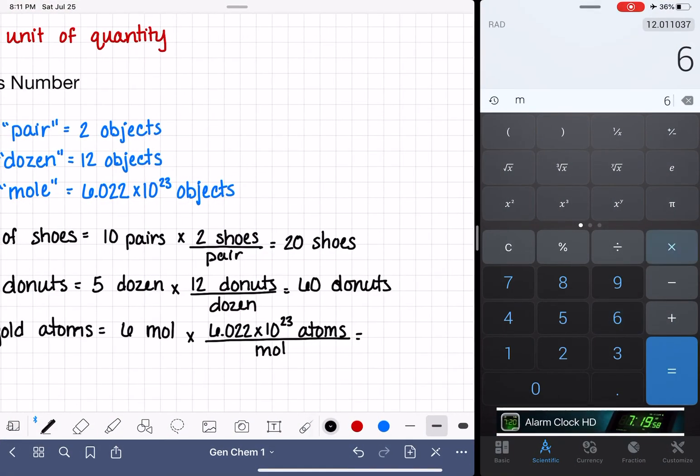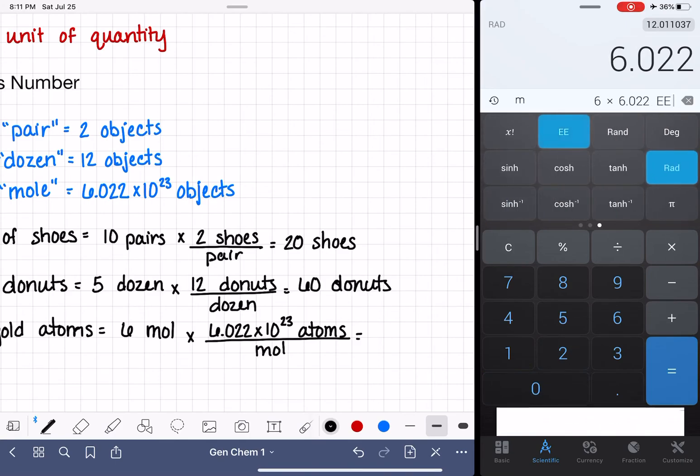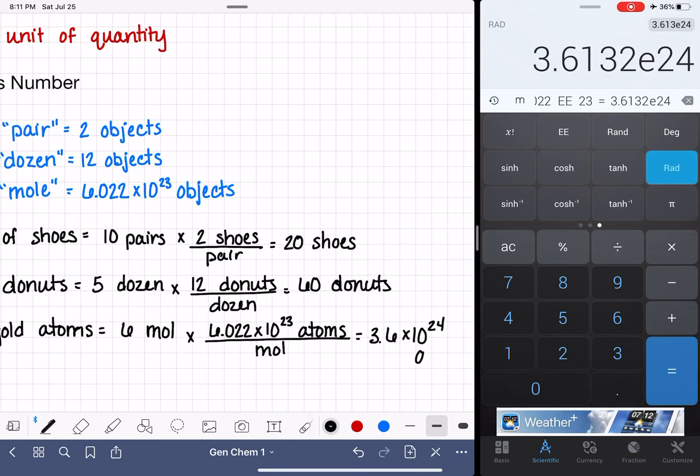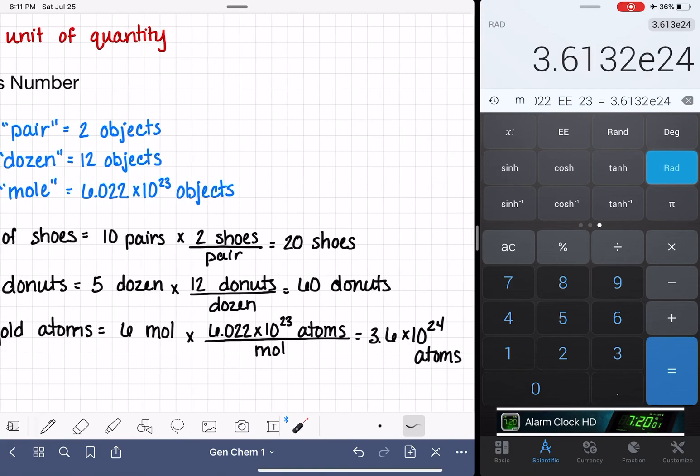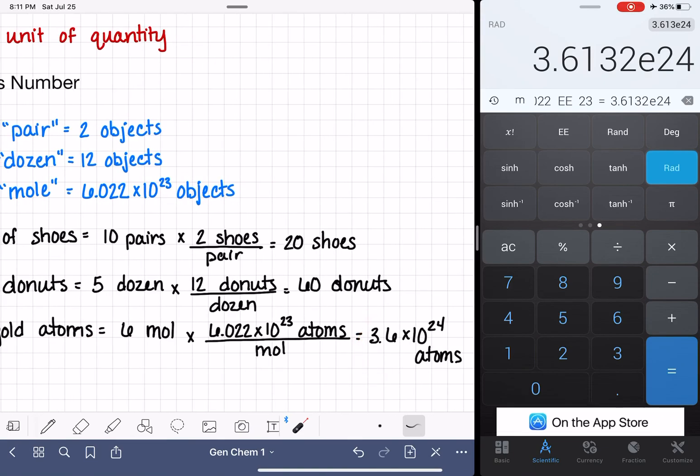6 times 6.022 times 10 to the 23rd, 3.6 times 10 to the 24th atoms. And it doesn't have to only apply to atoms. I mean, I could have just as well said that I have six moles of cats. And how many cats is that? And the answer still would have been exactly the same.